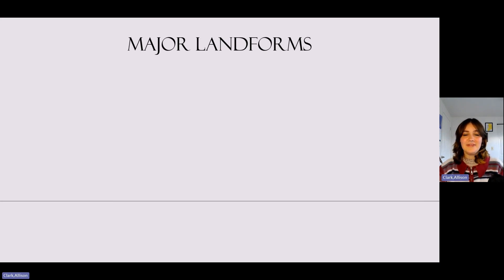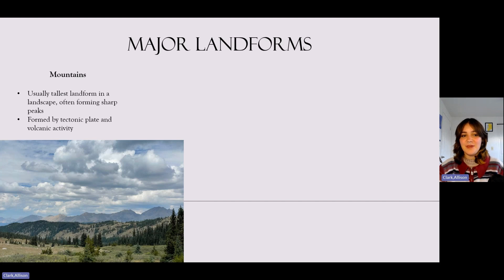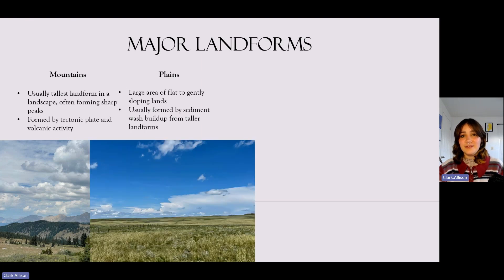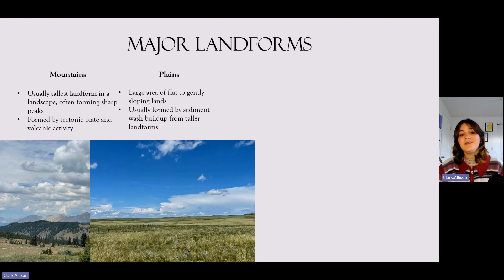There are four major landforms you've likely heard of before. The first is mountains, which are usually the tallest landform in the landscape and often form sharp peaks, created by tectonic plate and volcanic activity. There are also plains, which stand in stark contrast to mountains — a large area of flat to gently sloping land formed by sediment wash buildup over a long period of time from taller landforms.